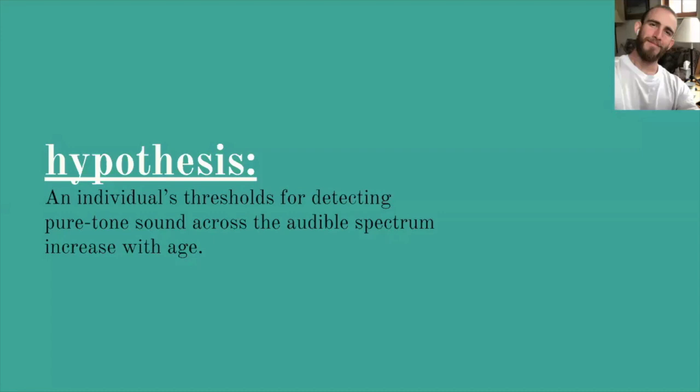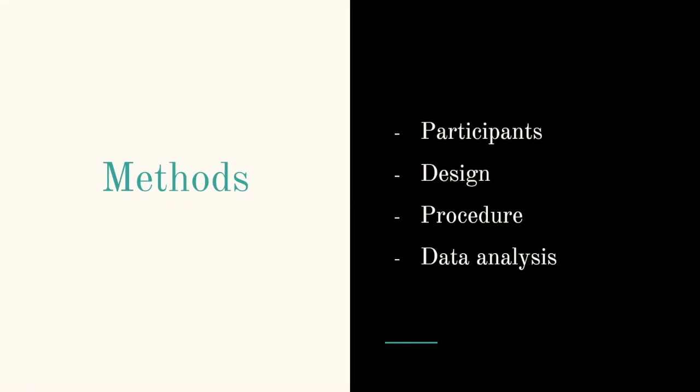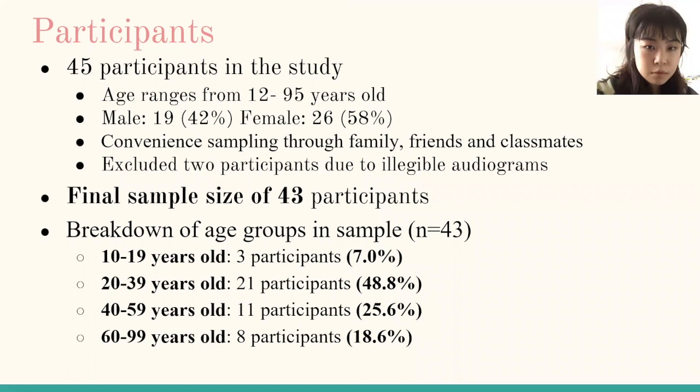Moving on to method, here is an overview of what we will be covering. For participants, we have a sample size of 45 subjects. Age ranges from 12 to 95, and we used a convenient sampling method by contacting family, friends, and classmates. The number of participants in each age group: 10 to 19 has 3 subjects, 20 to 39 has 21 subjects, 40 to 59 has 11 subjects, and 60 to 99 has 8 subjects. Two participants were screened out as the audiogram was illegible.